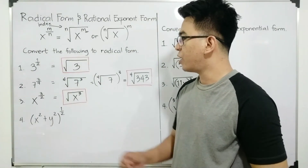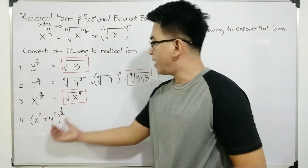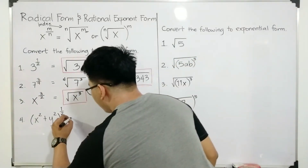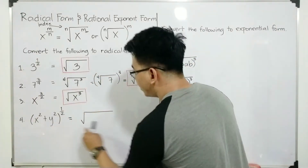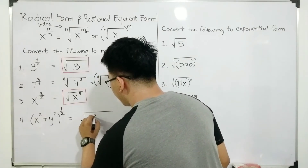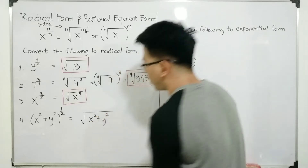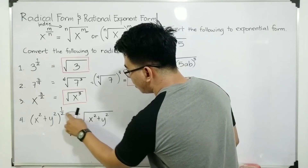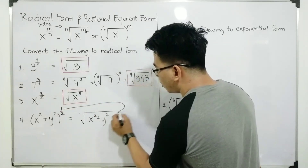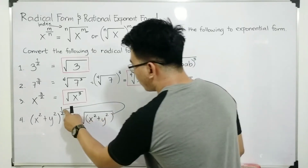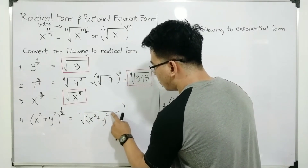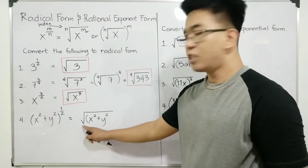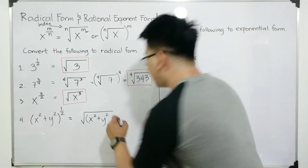Now let's move on with item number 4. In number 4, we are asked to convert this in radical form: x squared plus y squared raised to 1 half. So you need to draw a radical symbol, and then your radicand is x squared plus y squared. Your index is 2 — it will go here, but make it invisible. Here, your exponent 1 will serve as the exponent of this, but you also need to make this invisible. So the final answer in item number 4 is the square root of x squared plus y squared.